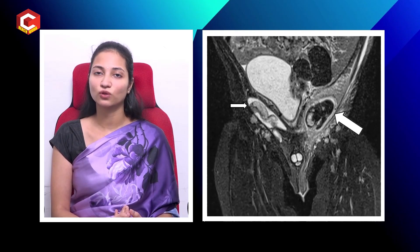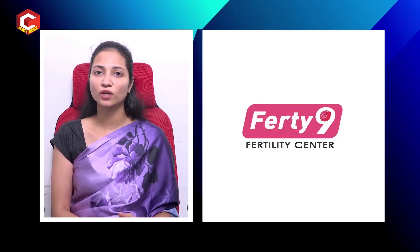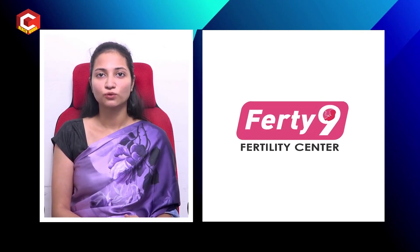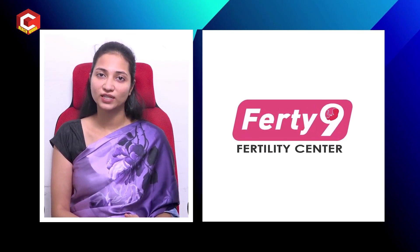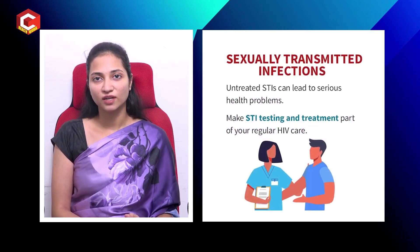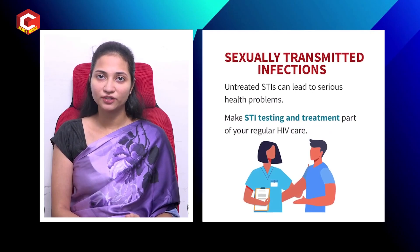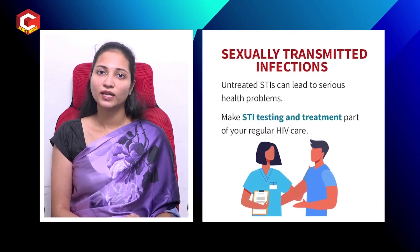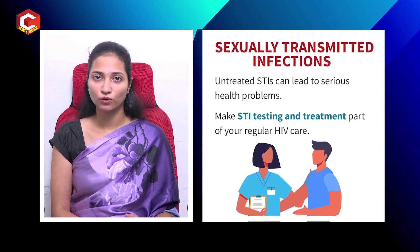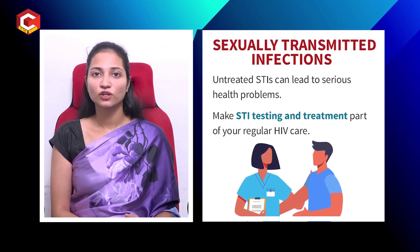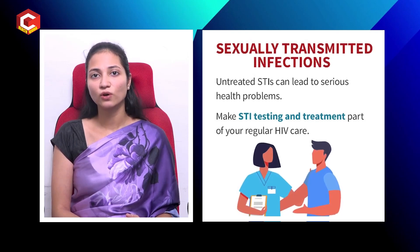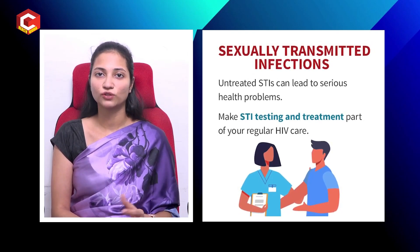Other important factors we collect in the history include any trauma, road traffic accidents, or injuries. We also ask about infections, sexually transmitted diseases, and mumps. Mumps is a viral infection that can occur in childhood and can affect sperm production.